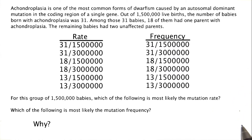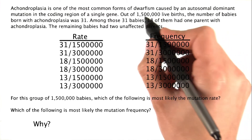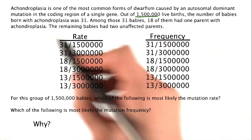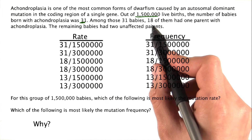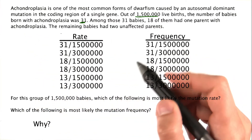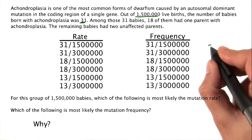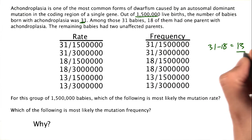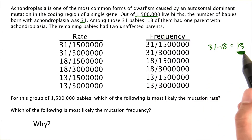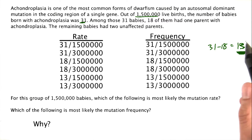All right, this last one for the problem set is a little bit tricky. Got to do some math and think laterally here. We've got 1.5 million live births. The number of babies born with achondroplasia was 31, and of these, 18 had a parent with achondroplasia. So 31 minus 18 is 13. That means 13 babies born with achondroplasia did not have a hereditary version of it — they had a new mutation that happened.